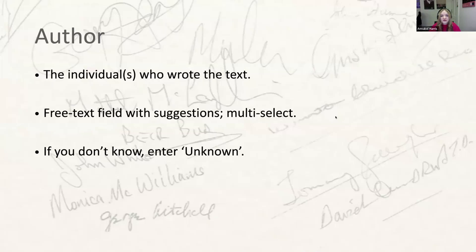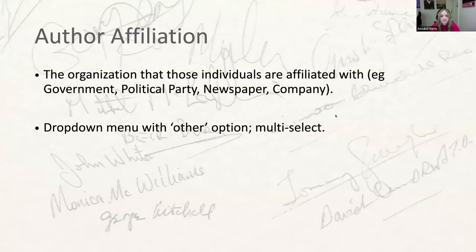The next field is the author, which is fairly self-explanatory — you need to tell us which individual or individuals wrote the text of the document. Where there is more than one author, separate them in the spreadsheet with semicolons, and enter 'unknown' if you're not sure. The lead editor and team leads will come up with a list of likely names that will appear as suggestions in the form in Quill, and will need to decide how to standardise referring to particular delegates — you don't want George Washington, Washington and 'the president' all appearing as separate authors.